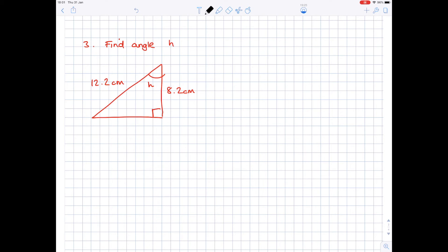Now we're looking to find angle H. So again we're going to start by labeling our sides. The side closest to the angle is the adjacent, the side opposite the right angle is the hypotenuse, the last side is the opposite. Then SOH CAH TOA.